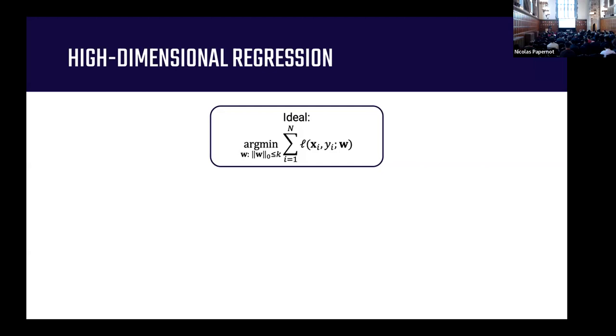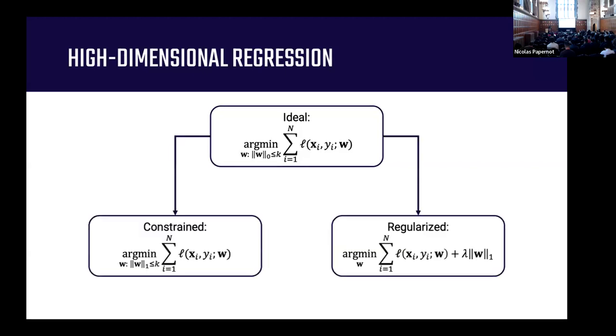Ideally, we'd solve this problem. We'd like to find a K-sparse parameter vector which minimizes the empirical risk. But optimizing over this can be difficult because the constraint set is non-convex, so we typically relax this in two ways.